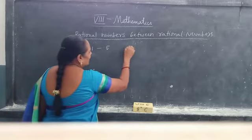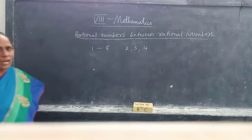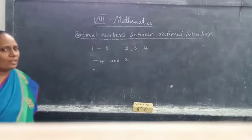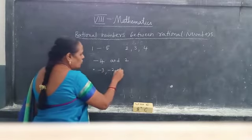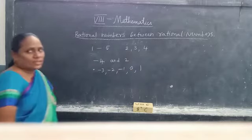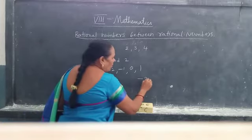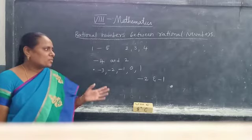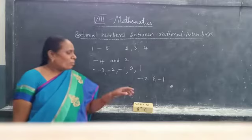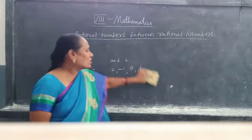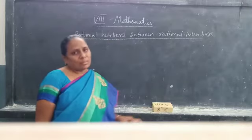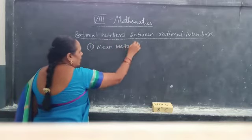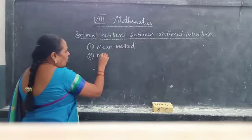We can easily say it is 2, 3, and 4. What are the integers between minus 4 and 2? Minus 3, minus 2, minus 1, 0, and 1. Can you tell what integers lie between minus 2 and minus 1? We can't say, because there are no integers between minus 2 and minus 1. But we can insert infinitely many rational numbers between two rational numbers, by two methods.